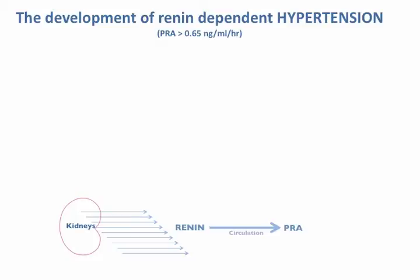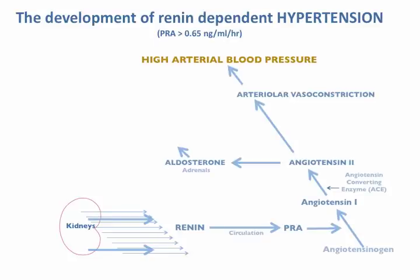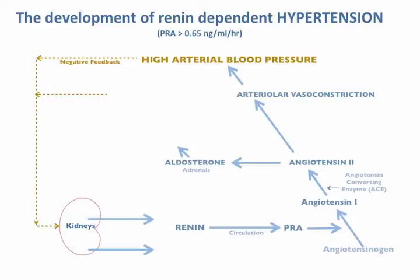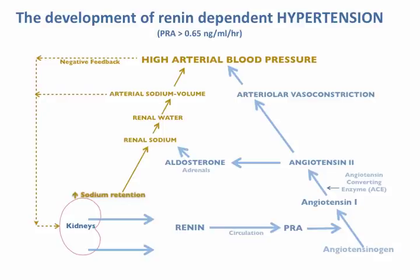In hypertensive patients, individual afferent arterioles often become ischemic, resulting in a fall in their blood flow and glomerular filtration rate. These ischemic nephrons react by increasing the rate of renin secretion. This would immediately cause blood pressure to rise if the normal nephrons did not become over-perfused and reactively reduce their rate of renin secretion. When such patients begin to retain sodium, the ischemic nephrons do not suppress the renin secretion appropriately, and a form of hypertension develops that is both sodium-dependent and renin-dependent.